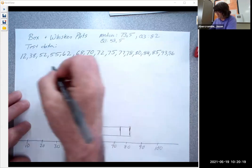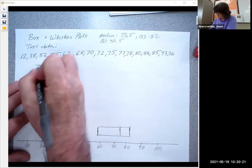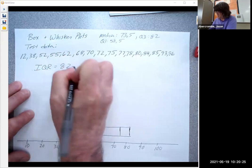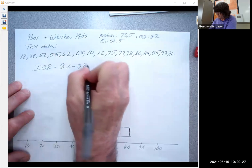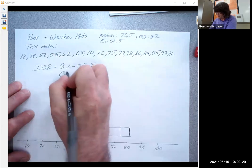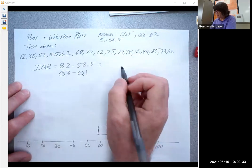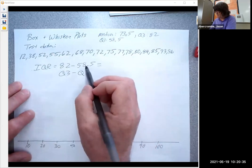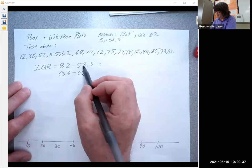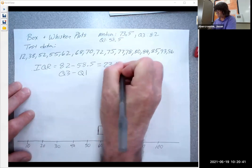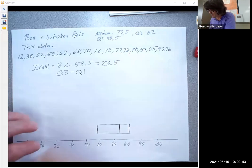My IQR, interquartile range, is 82 minus 58.5. That's Q3 minus Q1. And that is going to be, what's this, one and a half to 60, 23 and a half. That's my interquartile range.